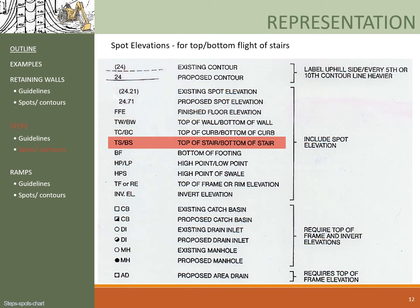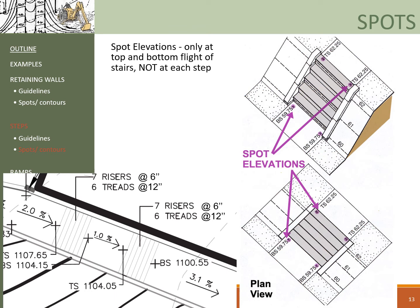Next, let's talk about representing stairs with spots and contours. Spots are more important than contours and could be included on the construction joints for stairs. We use Top of Stairs (TS) and Bottom of Stairs (BS), labeled at the top and bottom of each flight. TS and BS should not be labeled at each individual step — only at the top and bottom of each flight. You could also label just one TS and one BS in the middle of the plan.